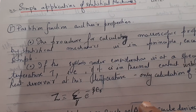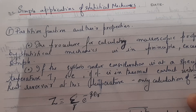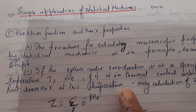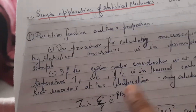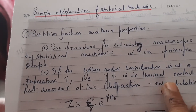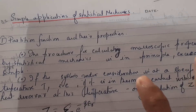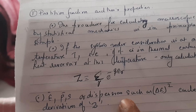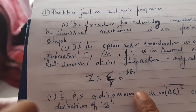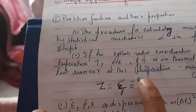Whatever system you are considering — say a gas of volume V — if it is at a specified temperature T, or if it is in thermal contact with a heat reservoir at this temperature, then all we have to do is calculate the partition function. The partition function is Z equals summation over r of e raised to minus beta times E_r, where r denotes the specified states and E_r is the energy of state r.